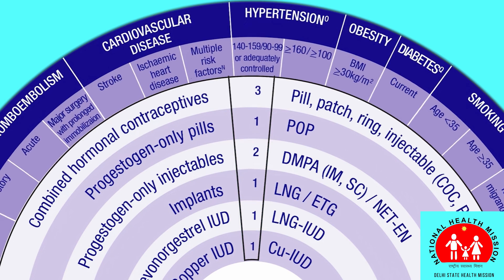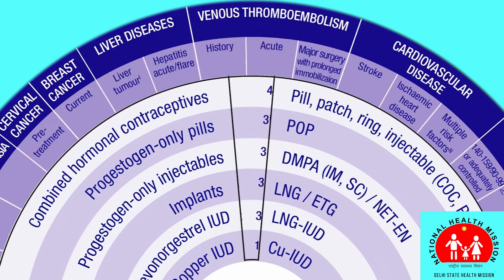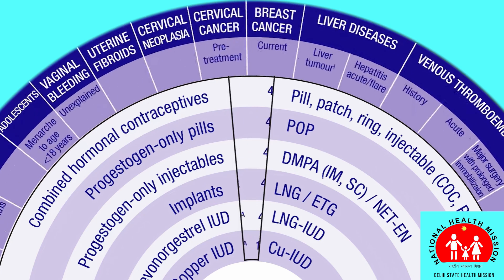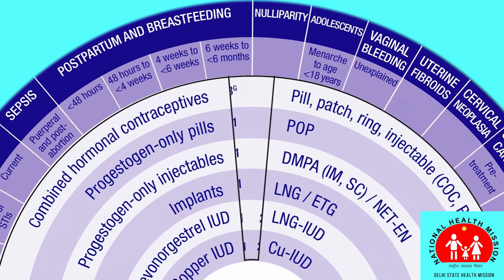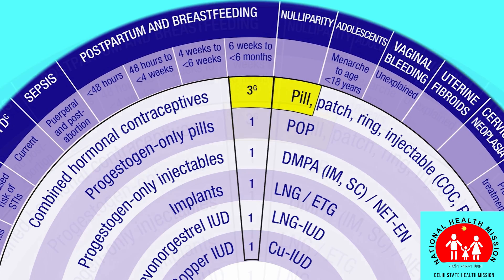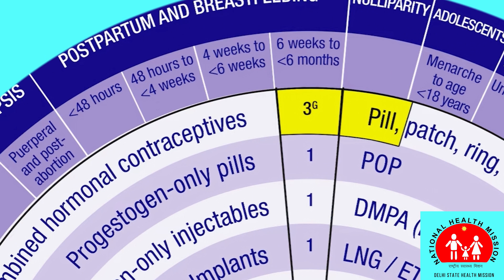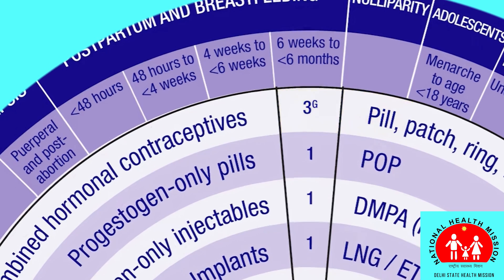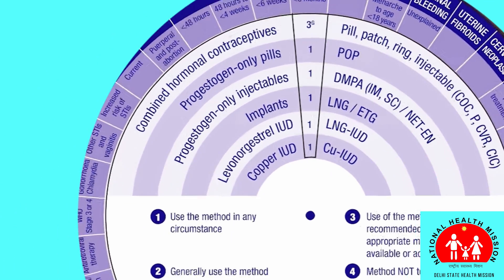Some numbers have small letters next to them. For example, using the pill is given a 3G when a woman is breastfeeding and is less than six months postpartum. The 3 indicates the pill is not safe. Look up the letter on the back of the wheel for more information.